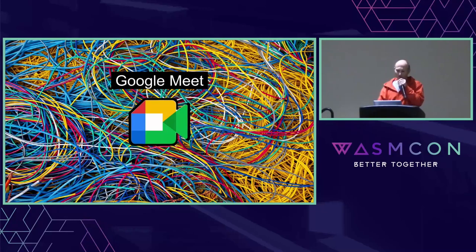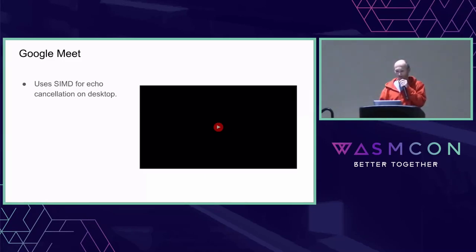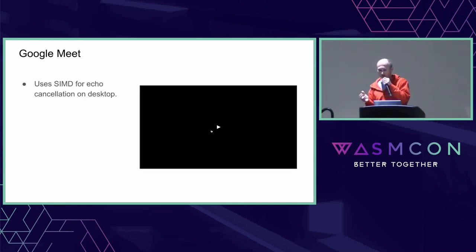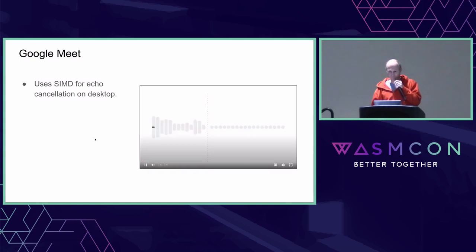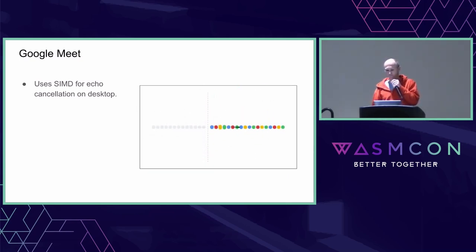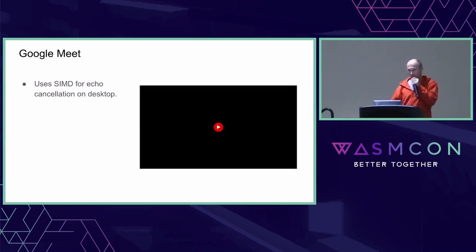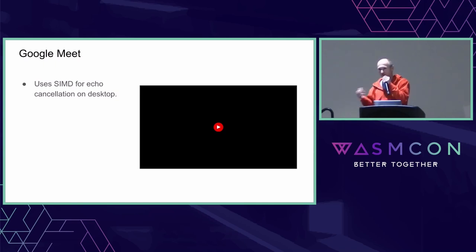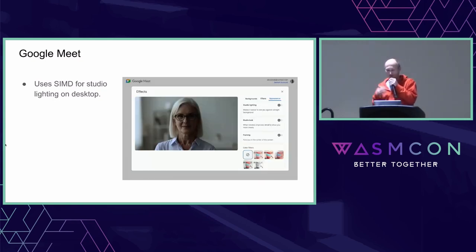Google Meet uses SIMD for echo cancellation — a core meeting feature. You can hear the difference between audio without optimization versus with echo cancellation optimization. This also handles a lot of background noise removal, so even working from home with neighbor's dogs barking, meeting partners typically won't hear it. Pretty impressive what SIMD can do for these audio optimizations.